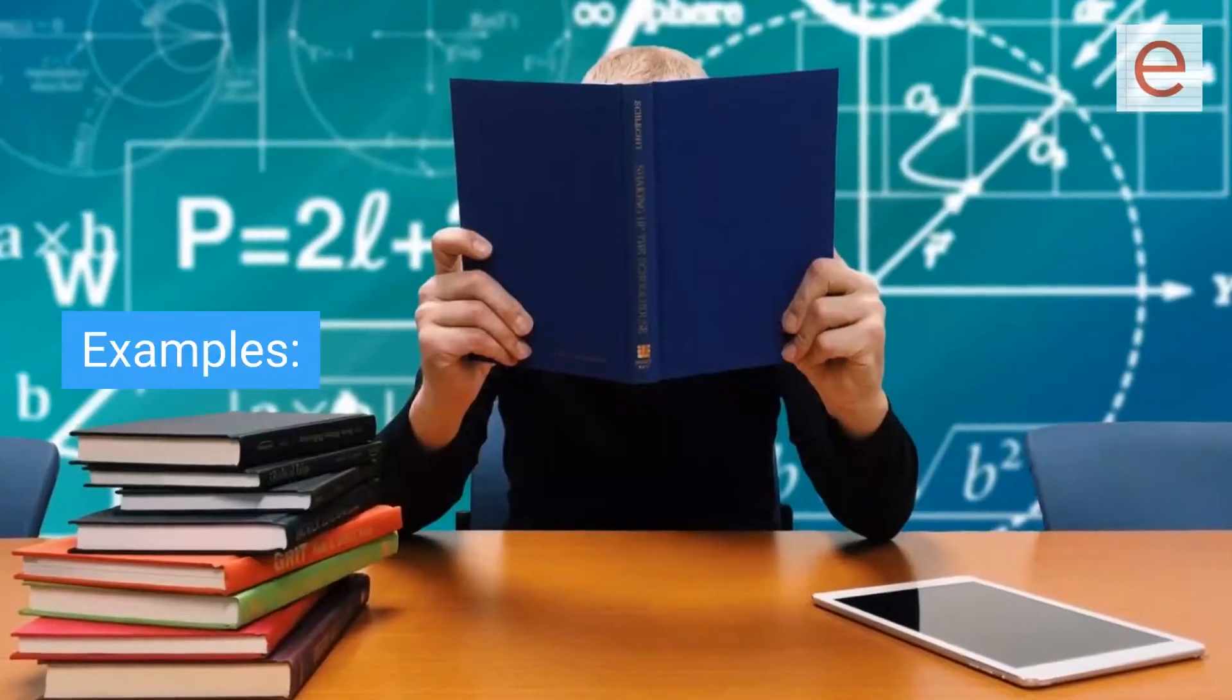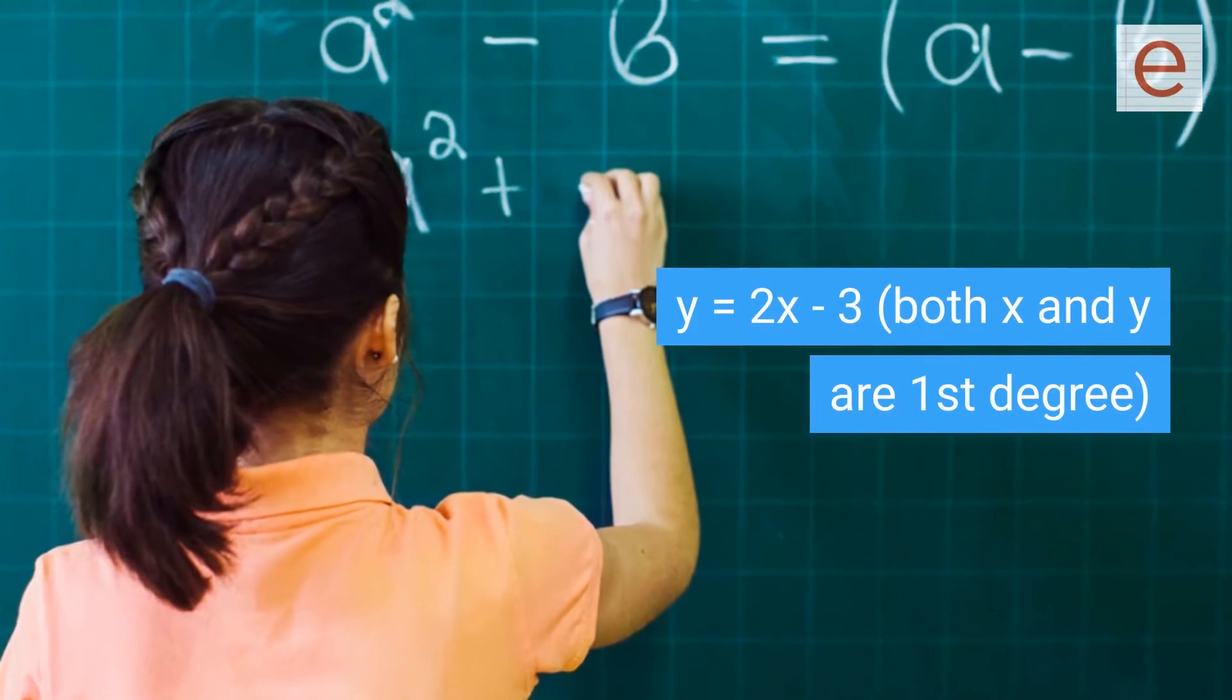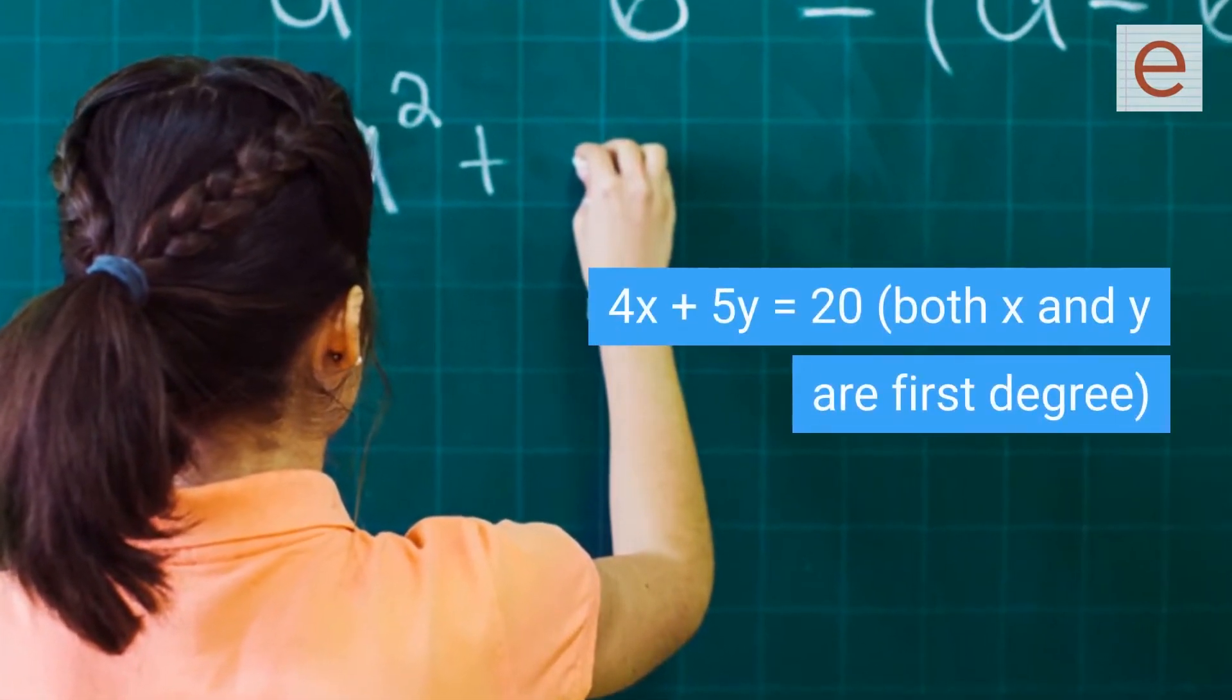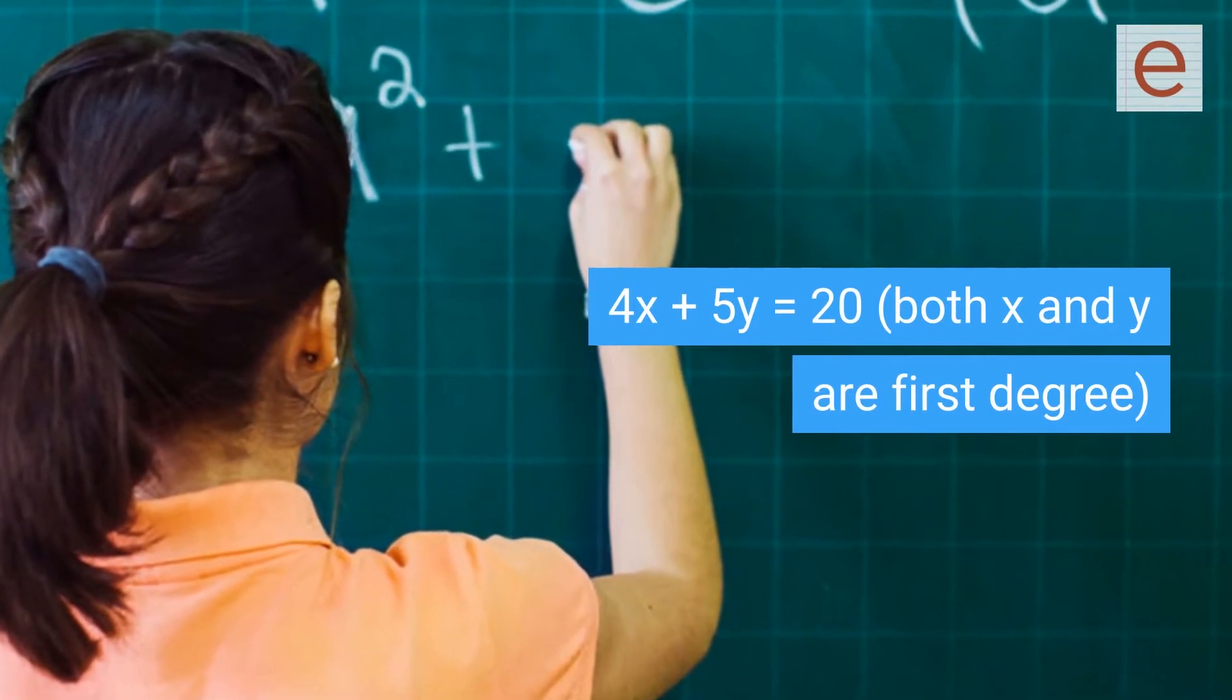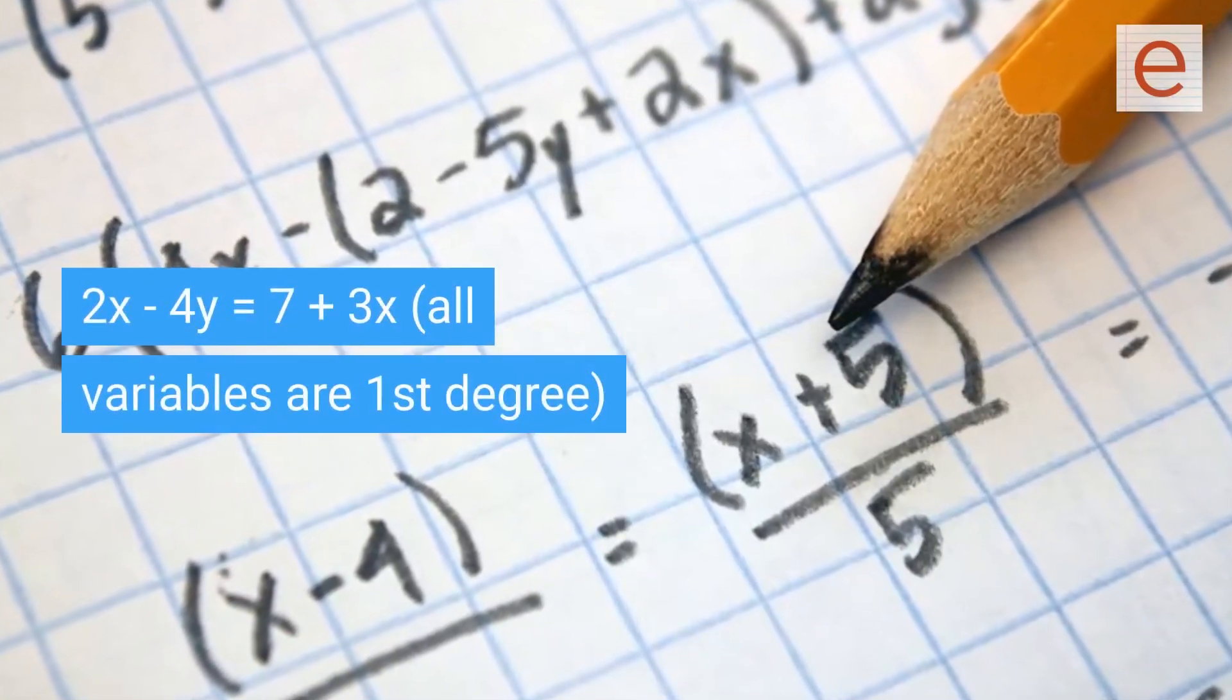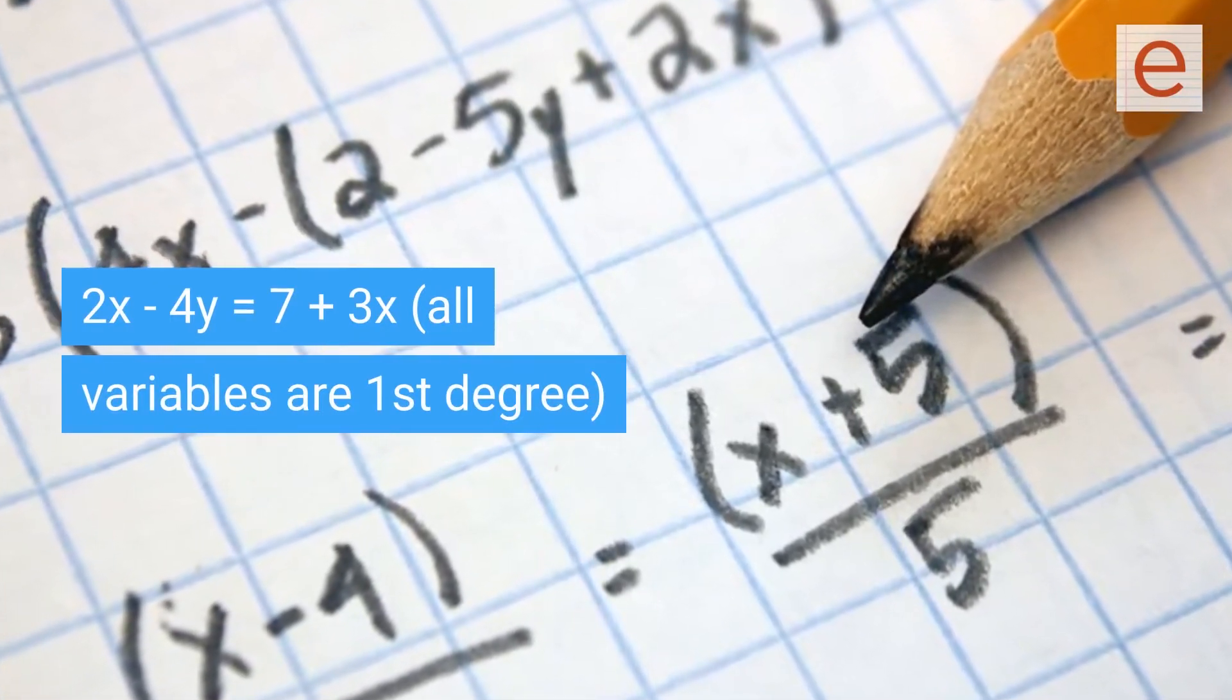Examples: y equals 2x minus 3, both x and y are first degree. 4x plus 5y equals 20, both x and y are first degree. 2x minus 4y equals 7 plus 3x, all variables are first degree.